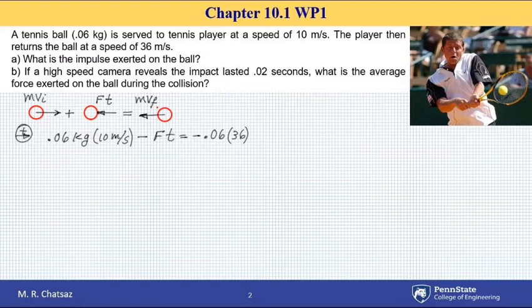J equals FT equals 10 times 0.06, which is 0.6, plus 2.16 if I multiply those two numbers. Therefore, impulse J will be 2.76 Newton seconds.